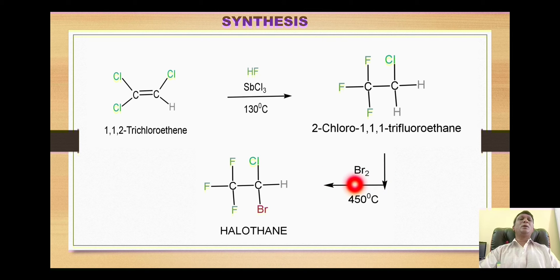This reacts with molecular bromine at an elevated temperature of 450 degrees centigrade, which is very high. It is a famous free radical substitution reaction. The bromine radical formed from bromine molecule and the ethyl radical from this ethane molecule combine together to give us formation of our title compound halothane.